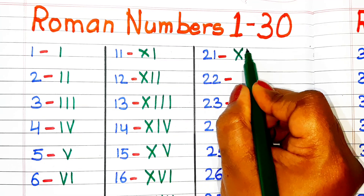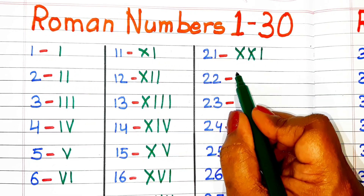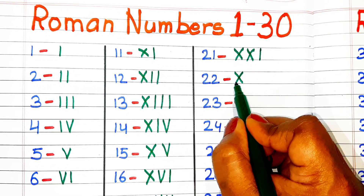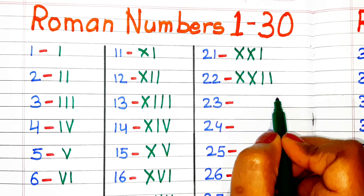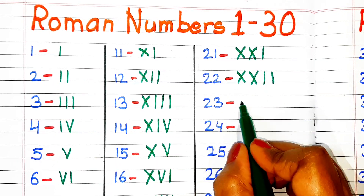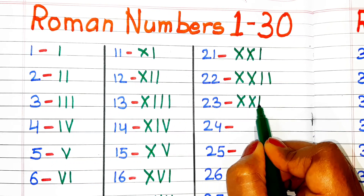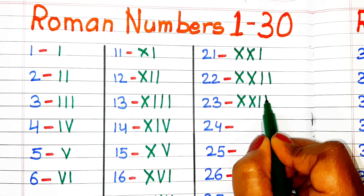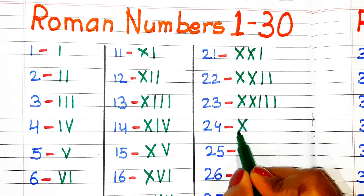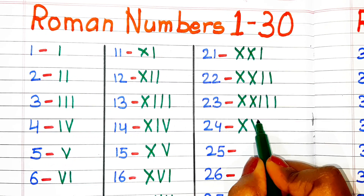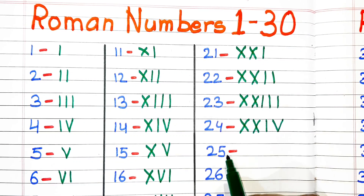21 = XXI. 22 = XXII. 23 = XXIII. 24 = XXIV. 25 = XXV.